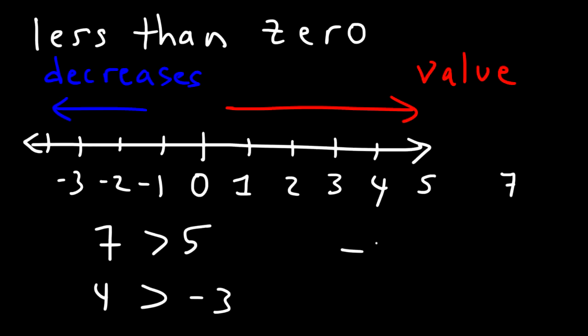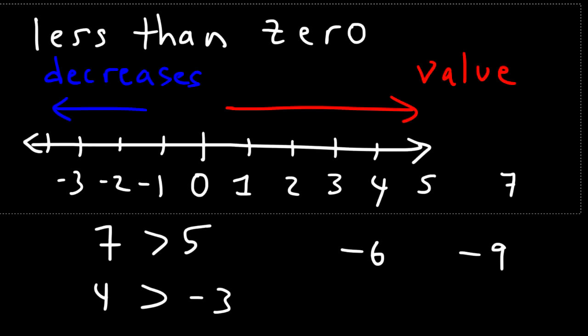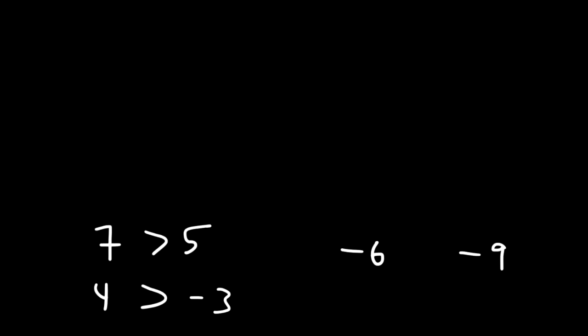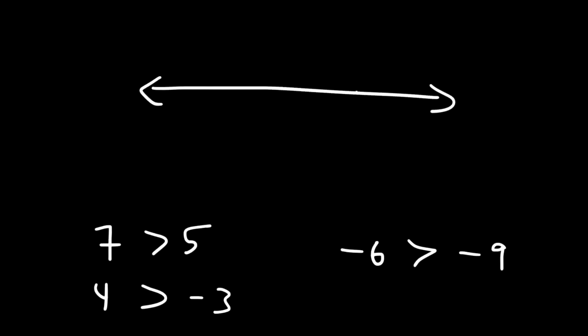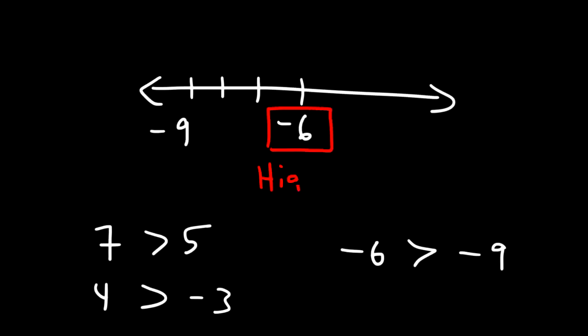Let's say if we have negative 6 and negative 9 — which one has a greater value? The one that is more negative has a lower value. So negative 6 is greater than negative 9. If you plot negative 6 here, negative 9 will be to the left of negative 6, and so negative 6 has a higher value.